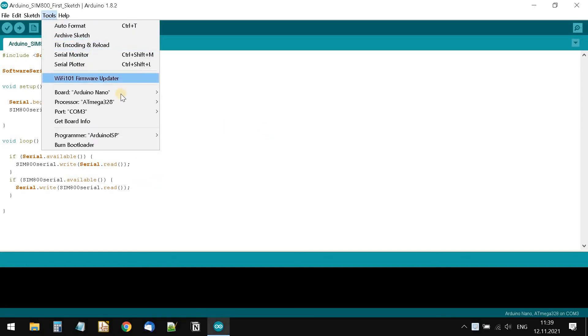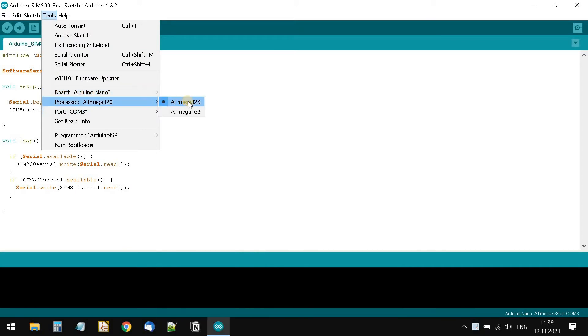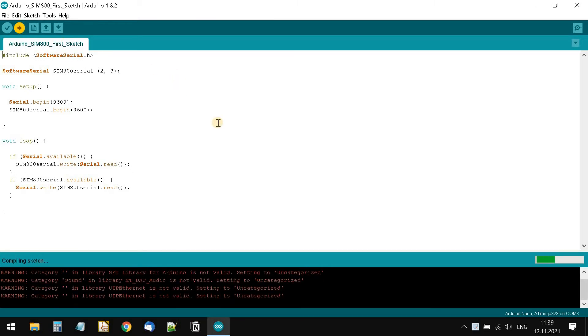Now let's double check that we have the correct controller and port for programming, and load this test program. After uploading the sketch to the controller, you can open the port monitor, select the appropriate baud rate and try to communicate with the GSM module.